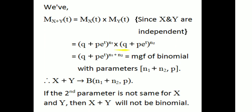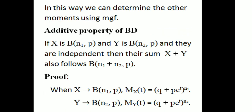Since X and Y are independent, the moment generating function of X plus Y equals M_X(t) times M_Y(t). This gives q plus p e raised to t, all raised to n₁, times q plus p e raised to t, all raised to n₂, which equals q plus p e raised to t, all raised to n₁ plus n₂. This is the moment generating function of a binomial distribution with parameters n₁ plus n₂ and p. Therefore X plus Y follows B(n₁ plus n₂, p).